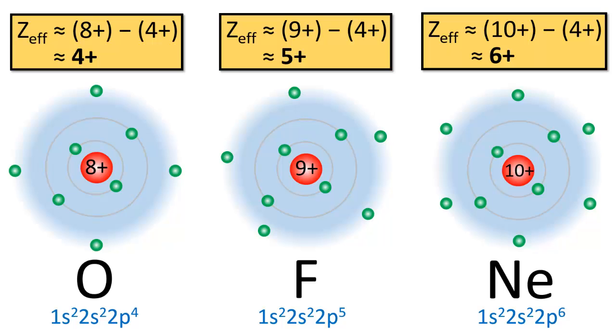So with each step to the right across a period, the charge of the nucleus increases by 1+. You also get another valence electron, but valence electrons don't provide shielding to one another — they're only shielded by core electrons. Therefore, the effective nuclear charge increases going from left to right across a period.